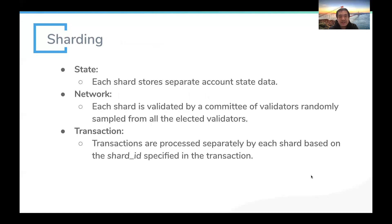Harmony is a sharded blockchain with three aspects of sharding. First is state sharding: each shard stores a separate state database — all account data and smart contract data are separate in different shards, so they can run consensus separately. The network is also sharded: each shard has a separate set of validators that runs consensus and produces new blocks in parallel. Transactions are also sharded, meaning each transaction is only meant for a single shard to process.